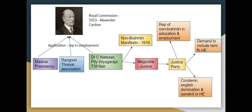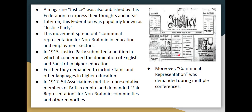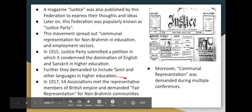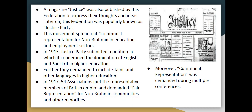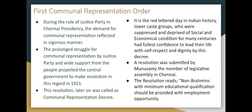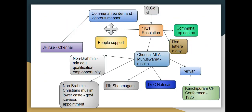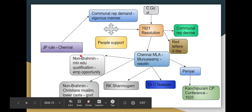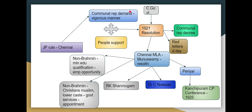The Justice Party demanded non-Brahman representation in education and employment, inclusion of Tamil in higher education, and condemned the domination of Sanskrit and English. In 1917, at a meeting of 54 associations in the British Empire, non-Brahmans demanded fair representation. These community conferences eventually led to the first Communal Representation Order.